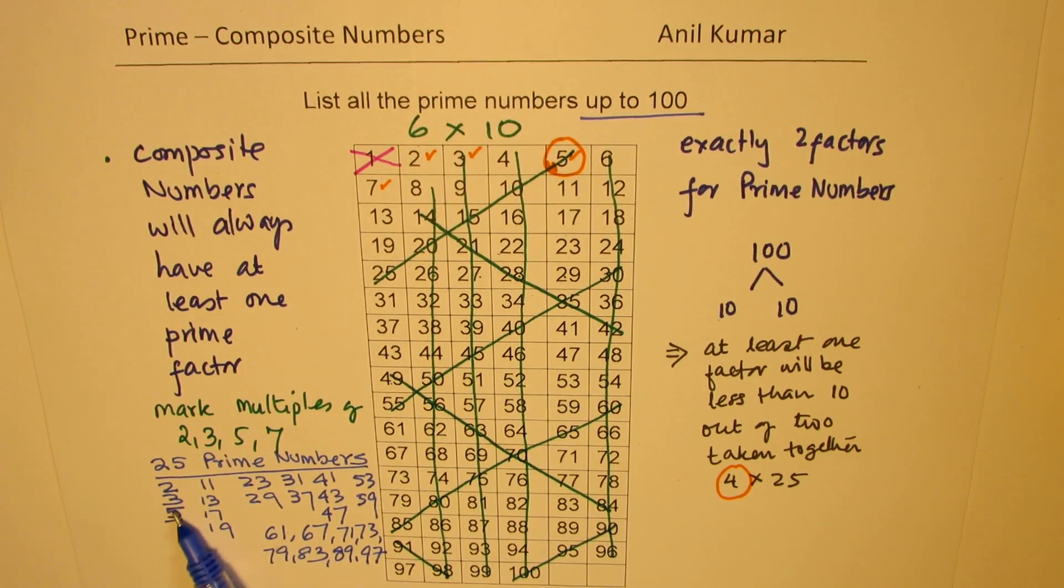So 97 is the greatest prime number less than 100. Let's count them. We have 1, 2, 3, 4, 5, 6, 7, 8, 9, 10, 11, 12, 13, 14, 15, 16, 17, 18, 19, 20, 21, 22, 23, 24, 25.